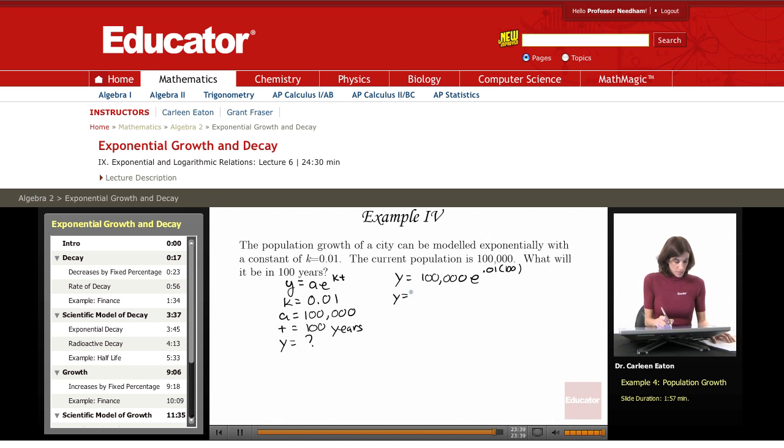This is y equals 100,000 times e. And this is just going to be 0.01 times 100. So that's going to give me 1.